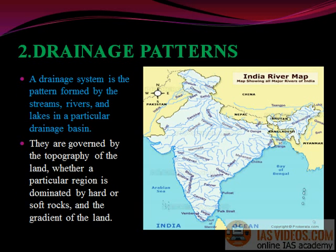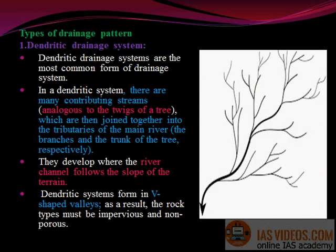Types of drainage pattern. Dendritic drainage system: Dendritic drainage systems are the most common form of drainage system. In a dendritic system, there are many contributing streams, analogous to the twigs of a tree, which are then joined together into the tributaries of the main river — the branches and the trunk of the tree, respectively. They develop where the river channel follows the slope of the terrain.